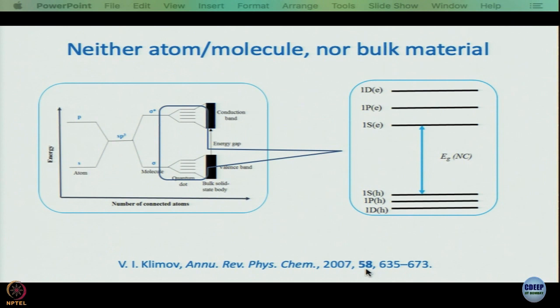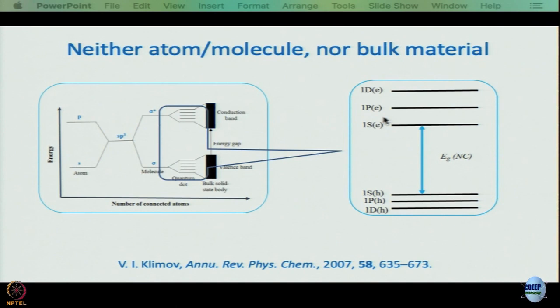For further discussion of energy level designation, one can follow a paper by Klimov in Annual Review of Physical Chemistry, 2007. The energy levels are designated as follows: in the valence band (lower levels), they are labeled 1s hole, 1p hole, 1d hole, and so on. In the upper levels (conduction band), they are designated 1s electron, 1p electron, 1d electron, and so on.